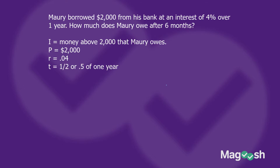For time, be careful — it says over one year, so the time interval is one year. Maury has only taken six months, which is 6 out of 12 months, or one half. So we set up I = 2000 × 0.04 × 0.5, and this gives us $40. That's how much interest he owes after this period, but remember he also owes the original $2,000, so he would owe the bank $2,040.